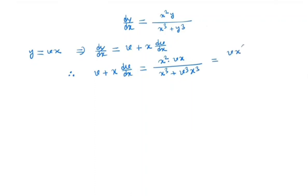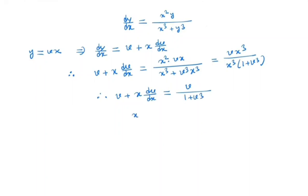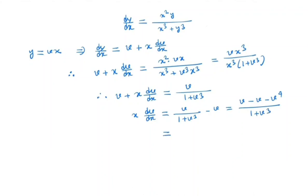Factoring out x³ from the denominator gives 1 plus v³. So we have v plus x dv/dx equals v divided by (1 + v³). Therefore x dv/dx equals v/(1 + v³) minus v, which simplifies to minus v⁴ divided by (1 + v³).